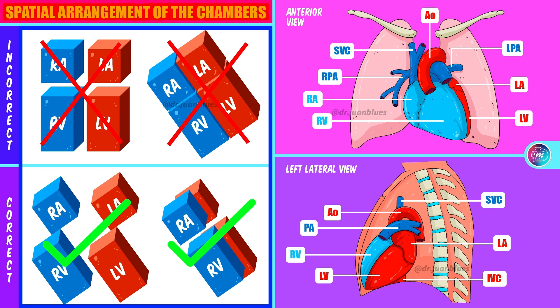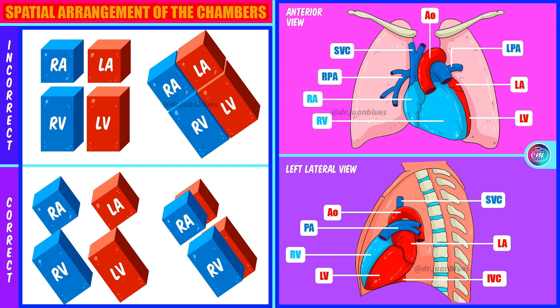If we look at the images of the right half seen from the front, we will mainly see the right-hand chambers — that's to say, the right atrium and the right ventricle. And if we take a left lateral viewpoint, we can see how the right ventricle clearly overlaps the left ventricle, and we can see the left atrium better. This is key to understanding the different sides of the heart, which we will study next.